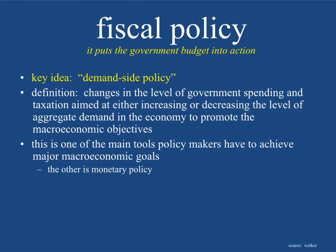Fiscal policy is the hammer in the toolbox that either creates — by pounding a nail in, creating government spending and injections — or pulls a nail out, pulling money out of people's pockets. The formal definition: fiscal policy is changes in the level of government spending and taxation aimed at either increasing or decreasing the level of aggregate demand in the economy to promote macroeconomic objectives, such as low and stable inflation, economic growth, or low unemployment, and equity in the distribution of income.